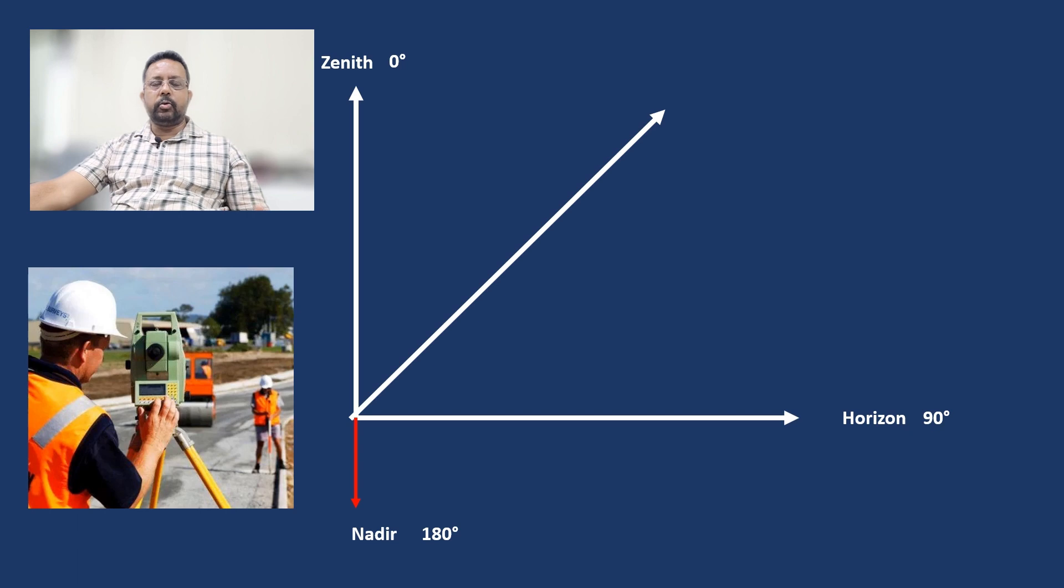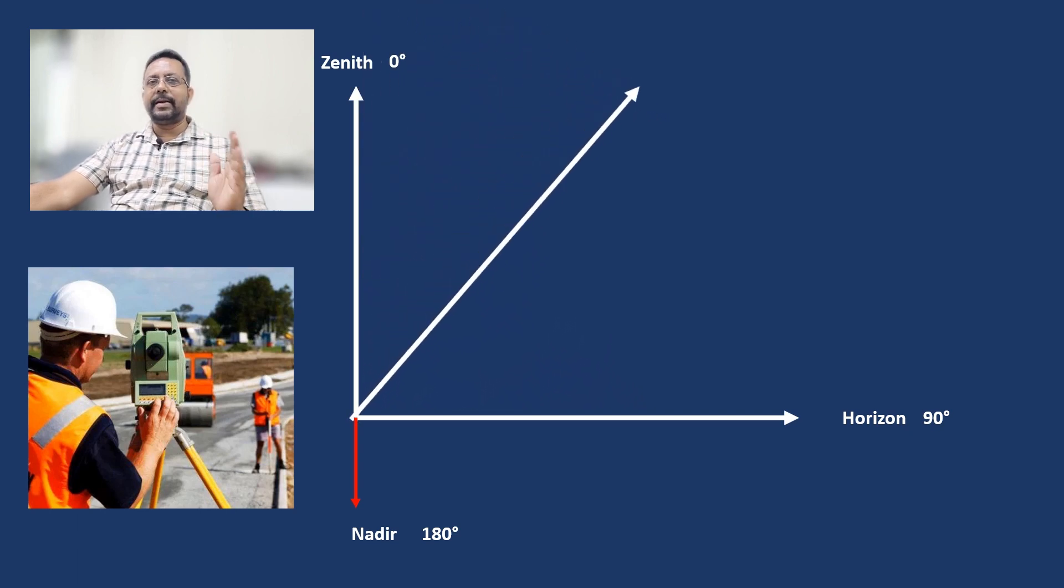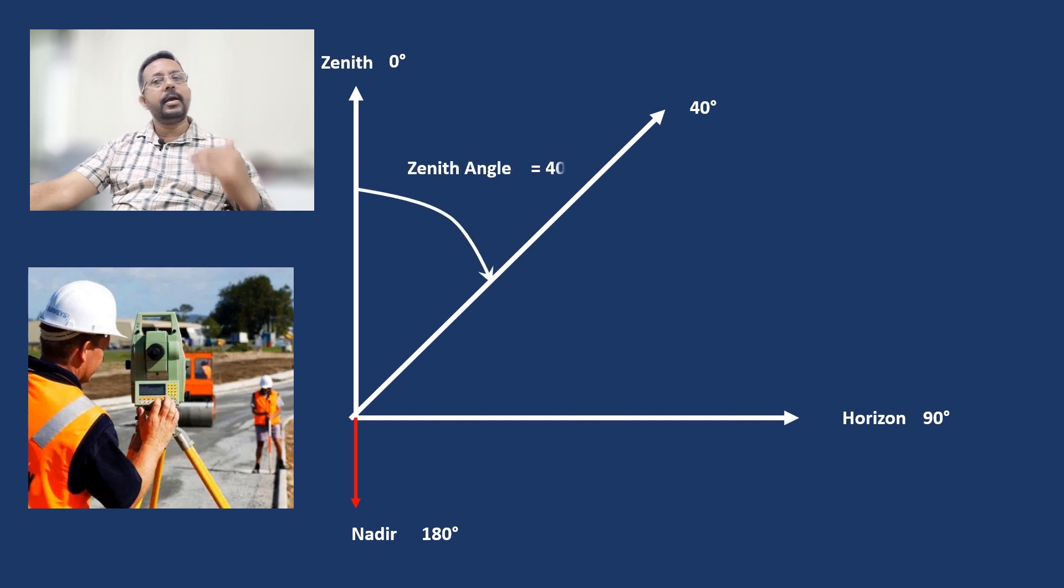Total station, things are a little bit different. The total station observes angles with reference to the zenith. So zenith is zero degrees, horizon is 90 degrees, and nadir is 180 degrees. With a total station, we are observing the angle with reference to the zenith, and that is the zenith angle. So this was the small video I wanted to show you.